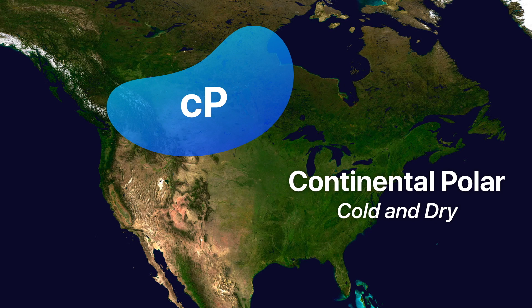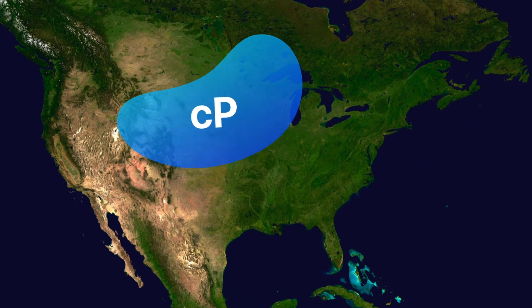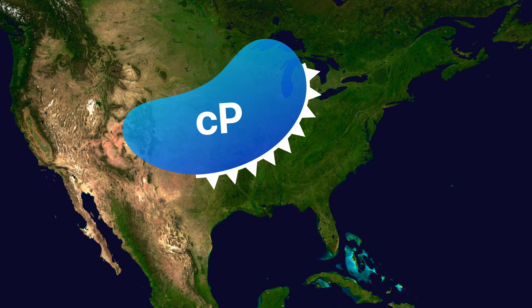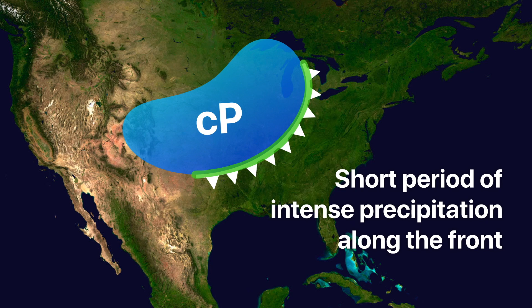A cold front is just the leading edge of a cold air mass. So right here is where we're going to see our cold front — this is the front edge of the CP air mass. Along that frontal boundary, where you see the white line with the symbol of triangles pointing in the direction the air mass is moving, we're going to experience a short period of intense precipitation right along the frontal boundary, the area shown in green.